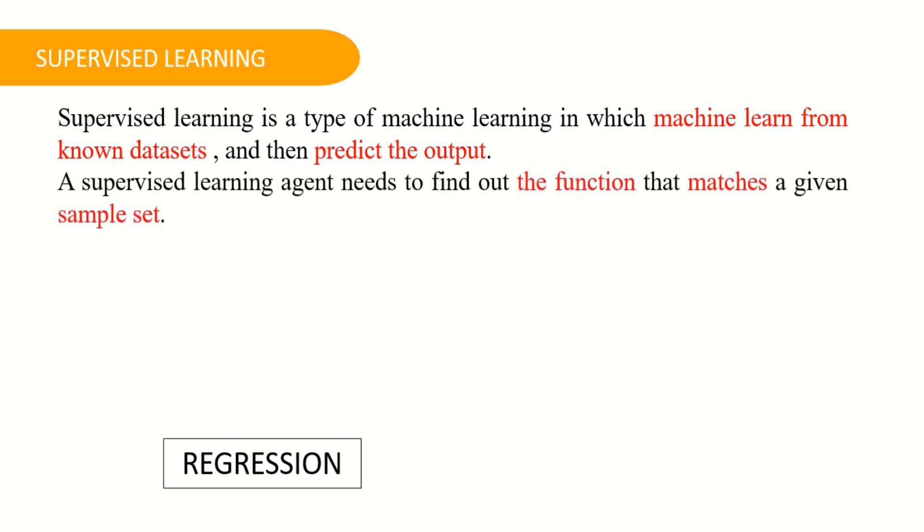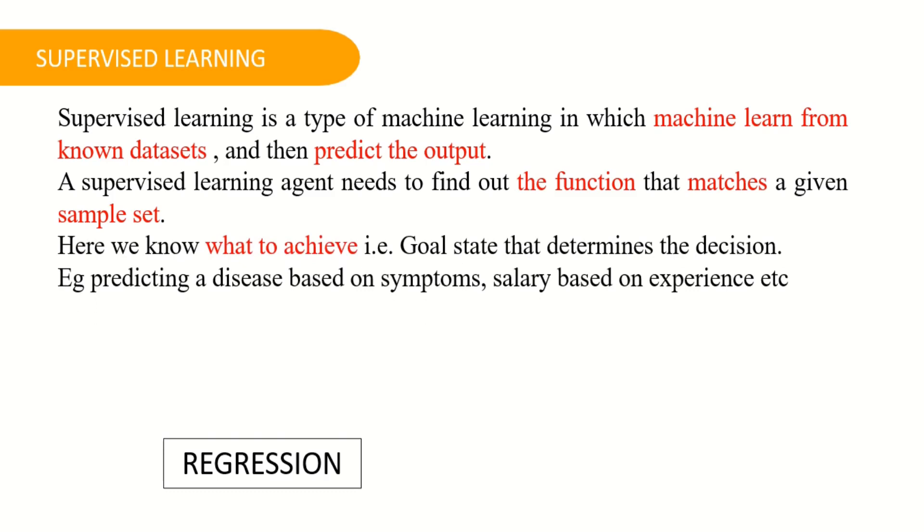In supervised learning, agent needs to find out the function that matches a given sample set. Moreover, here we know what to achieve, that is the goal state that determines the decision. Example can be predicting a disease based on some symptoms and also predicting the salary of an employee based on his experience.